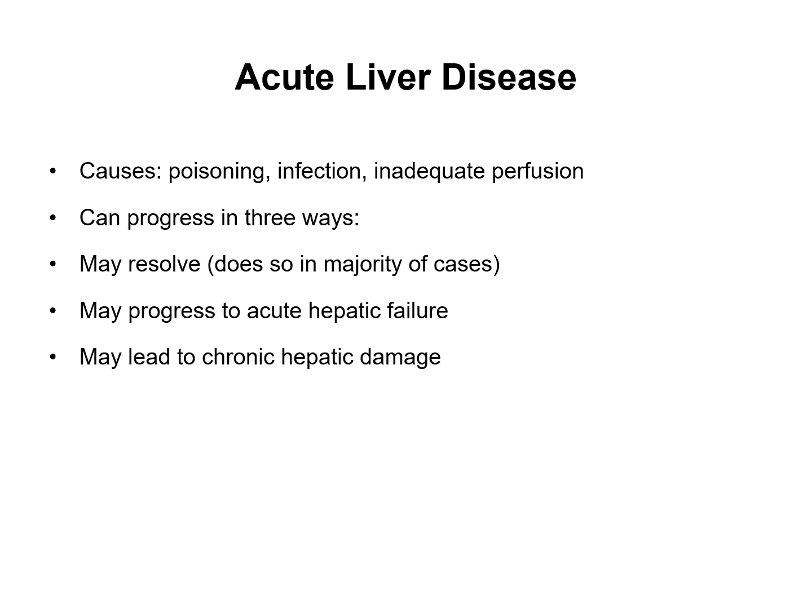Acute liver disease can be caused by poisoning — such as paracetamol poisoning — infection via hepatitis or bacterial infections, and inadequate perfusion such as hypovolemic shock. This can progress in three ways: it can resolve and return to normal, which occurs in the majority of cases; it can result in acute hepatic failure; or it can lead to chronic hepatic damage and long-term liver damage.